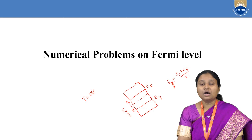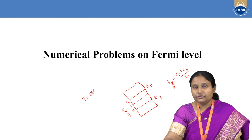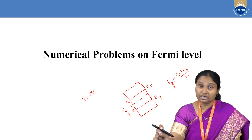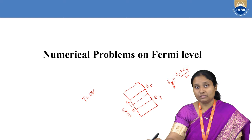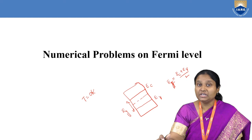That is half of the forbidden energy gap. When defining Fermi energy level in terms of temperature, we say that the Fermi energy level is the highest energy level — also called the boundary energy level — that separates filled energy states and unfilled energy states. This definition is applicable only at temperature T equal to 0 Kelvin.